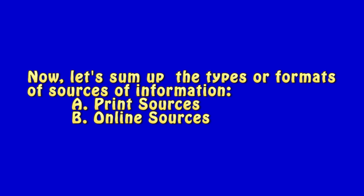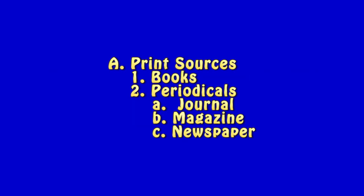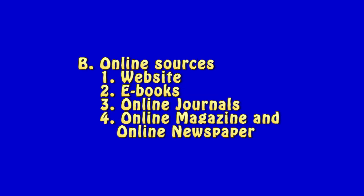Let's sum up the types or formats of sources of information: A — print sources, and B — online sources. Under print sources: (1) books, and (2) periodicals, which include journal, magazine, and newspaper. Under online sources: (1) website, (2) e-books, (3) online journals, and (4) online magazine and online newspaper.